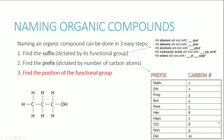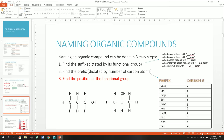Generally in IGCSE, you're only going to be looking at a single chain — they won't give you branches, so it's pretty easy. The third step is to find the position of the functional group, because that matters as well. I think the easiest way to demonstrate this is just to take a look at a molecule and give you an example.